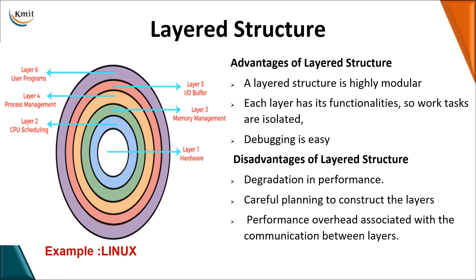The second structure is the layered structure. As the name implies, in a layered structure the total services of the operating system are divided into layers. Layer one takes care of the hardware, layer two handles CPU scheduling, layer three handles memory management, layer four deals with process management, layer five deals with input buffering and file data movement, and finally user programs sit at the top level as the application interface.